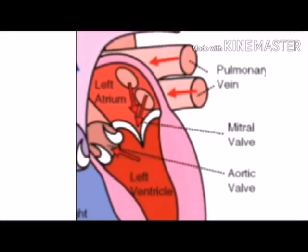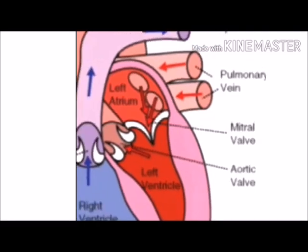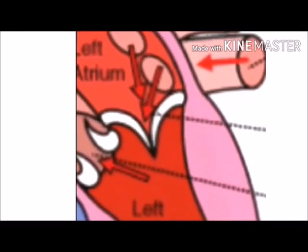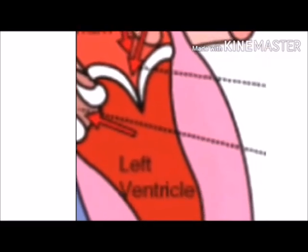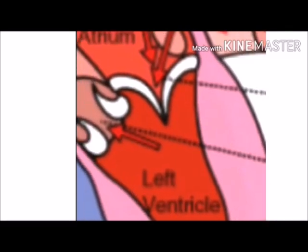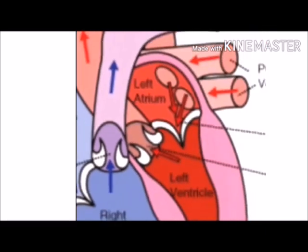After entering the right ventricle, blood enters the pulmonary artery and then into the lungs, where it gets oxygenated. That oxygenated blood enters the pulmonary vein. Normally in our body arteries carry oxygenated blood and veins carry deoxygenated blood, but in cardiac circulation the pulmonary artery carries deoxygenated blood and pulmonary vein carries oxygenated blood. Similarly in fetal circulation, umbilical artery carries deoxygenated blood and umbilical vein carries oxygenated blood — opposite to normal circulation.